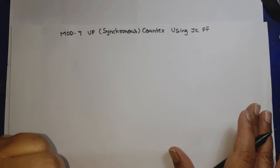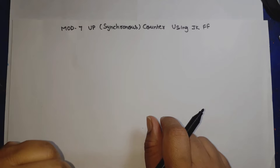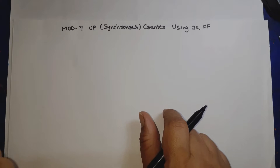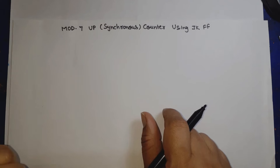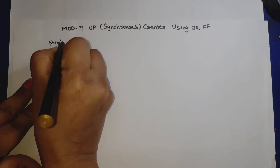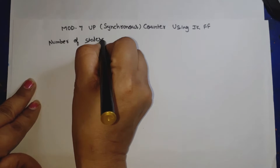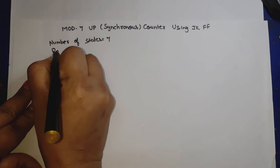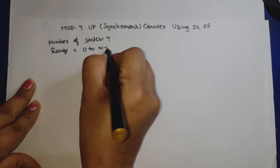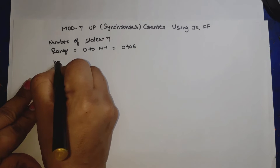Hello everyone. In this video lecture of digital electronics, I am going to design a mod-7 up synchronous counter using JK flip-flops. Mod-7 counter means the number of states will be equal to 7. Since this is an up counter, the range will be 0 to N minus 1, which means 0 to 6.